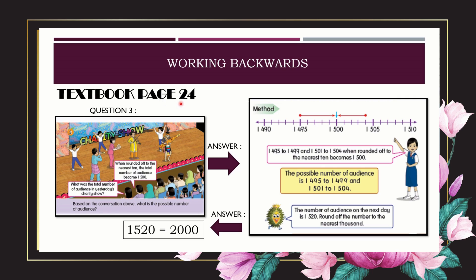Textbook page 24, question three. For this type of question, we use the working backwards strategy. We read the question: based on the conversation, what is the possible number of audience? When rounded off to the nearest ten, the total number of audience became 1,500. The question is: what is the possible number of audience?